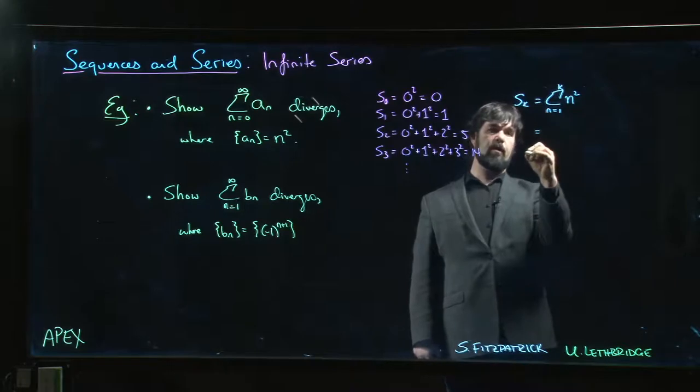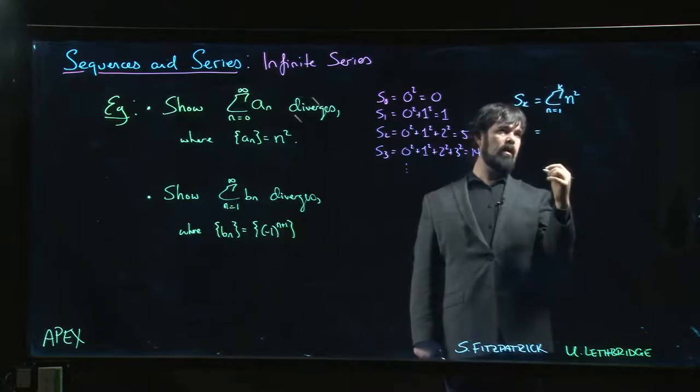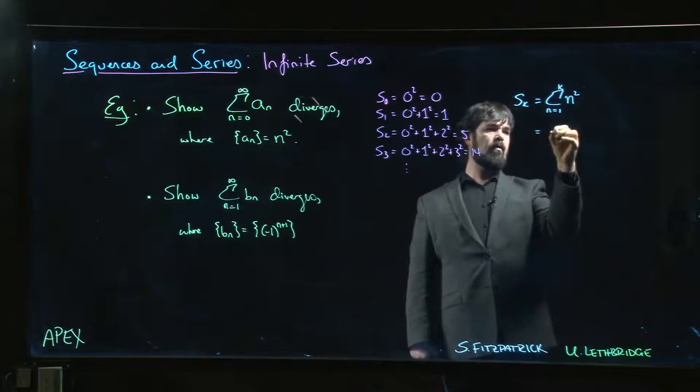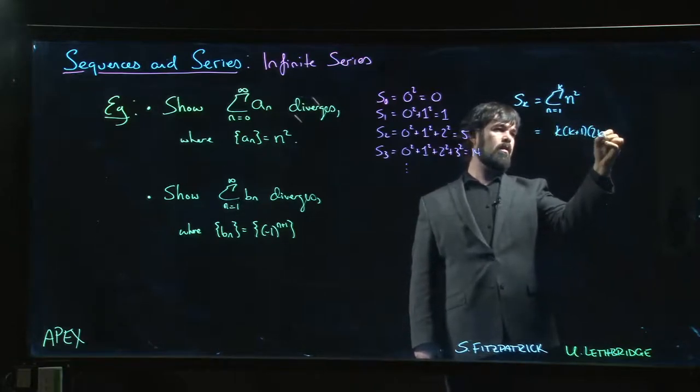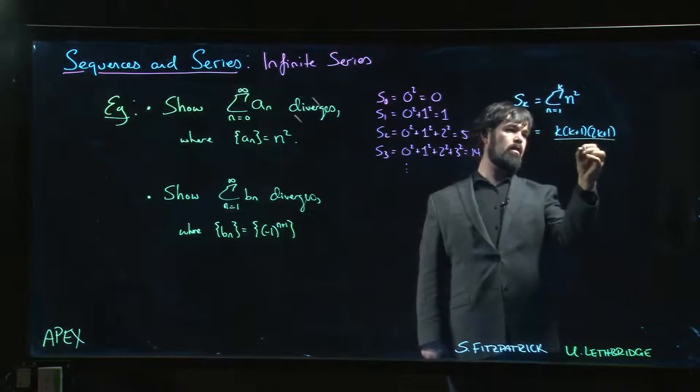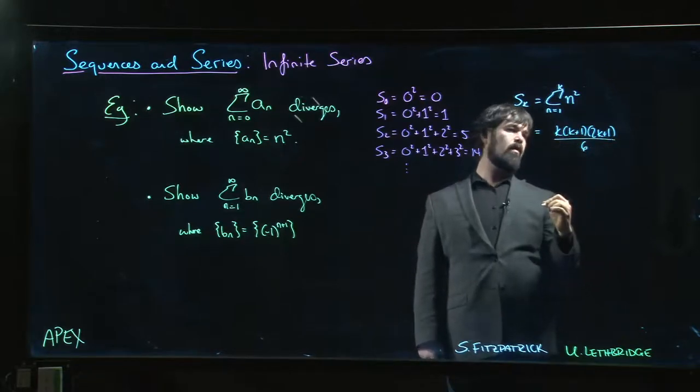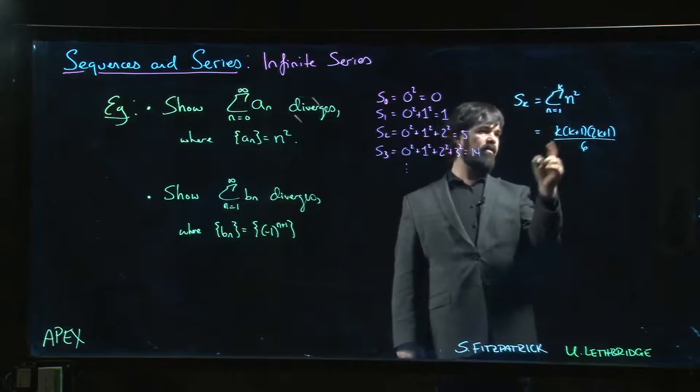We've seen that before way back when we were doing Riemann sums. We saw this summation formula—maybe we did it with i instead. We get something like k times (k+1) times (2k+1) over 6, and so certainly we can see from this